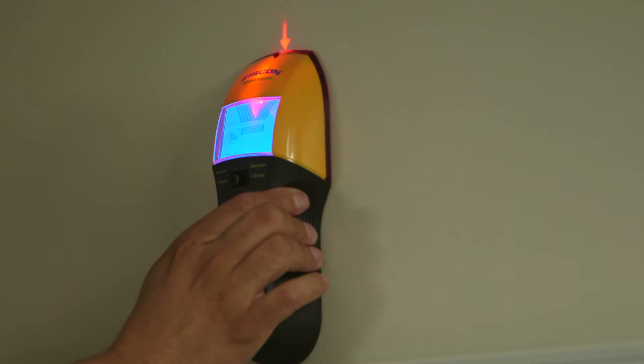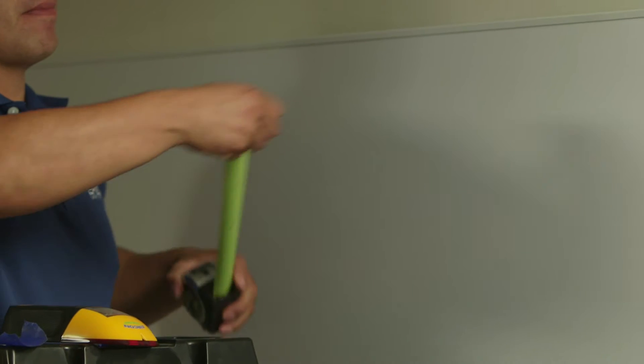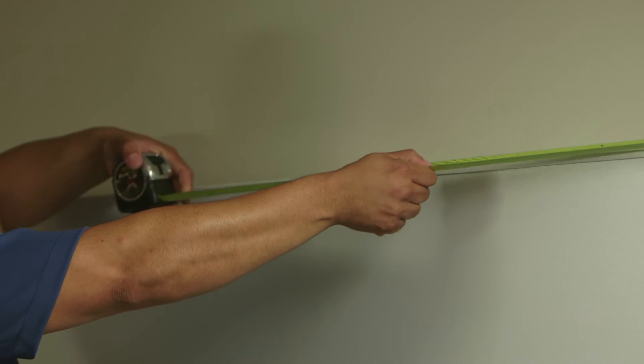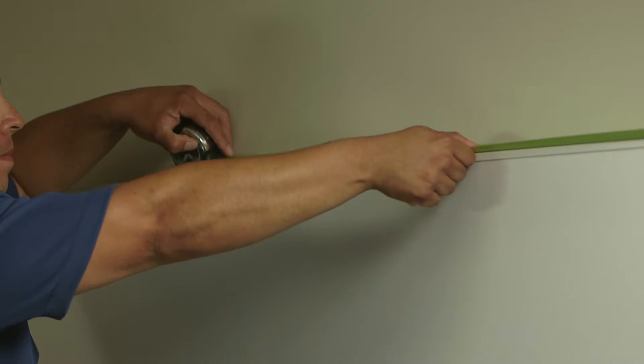Using a stud finder, you can locate the studs in the wall that can support the projector. Measure the width of the board to find its center and mark it.